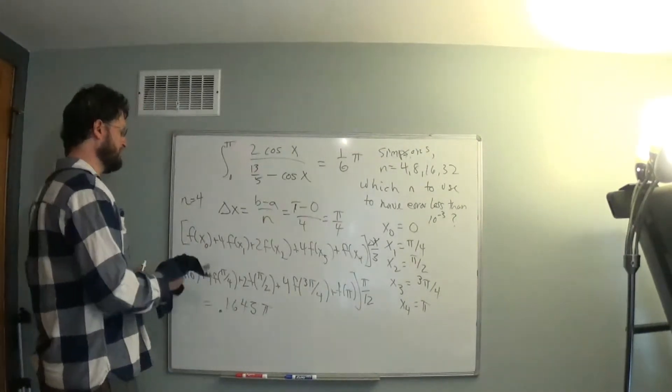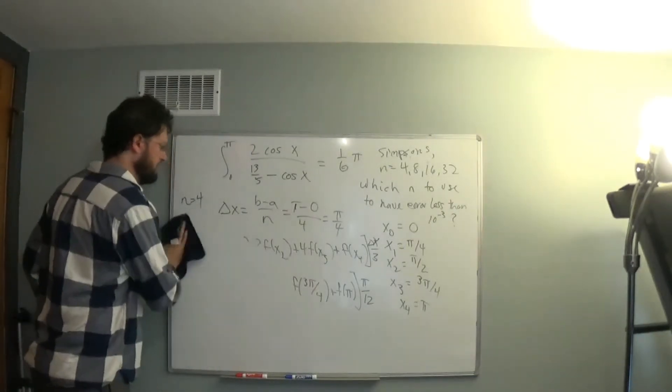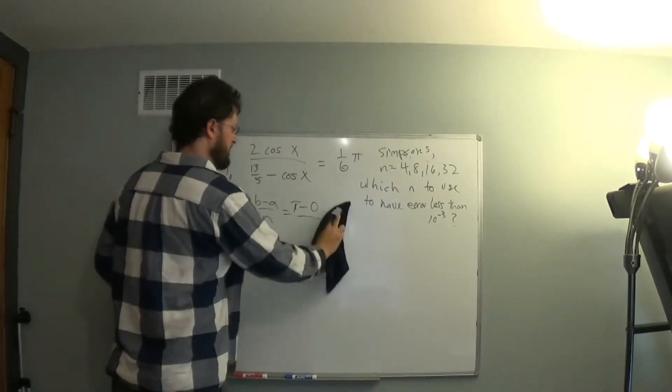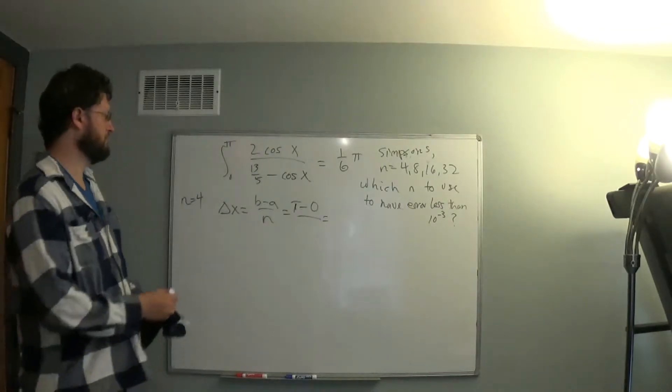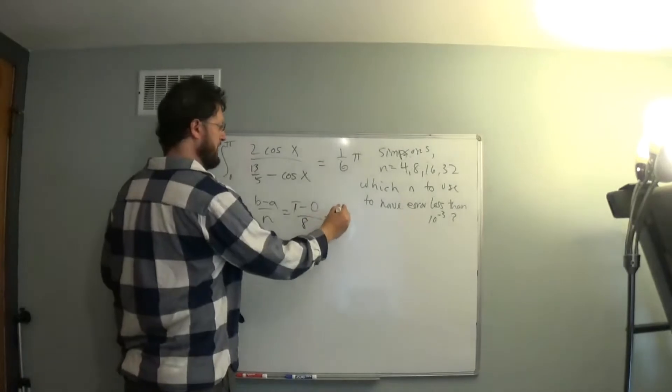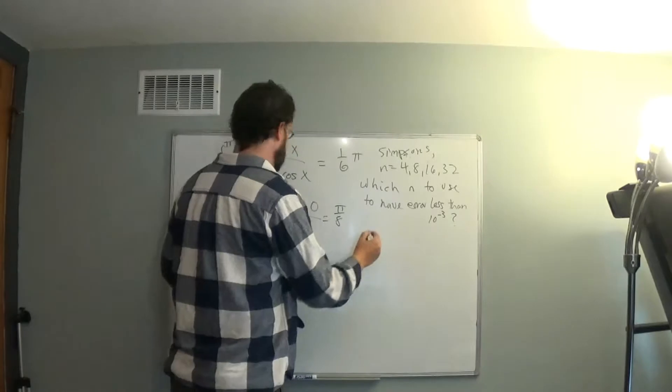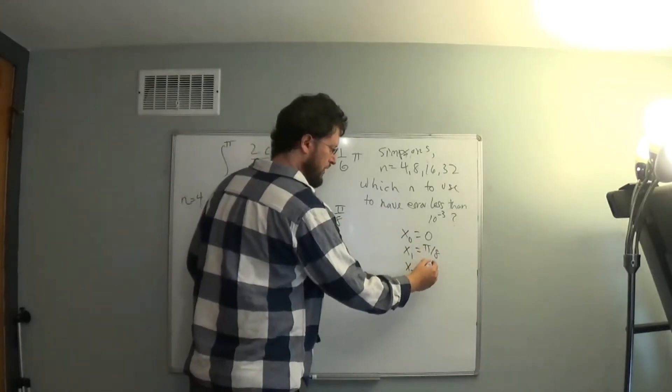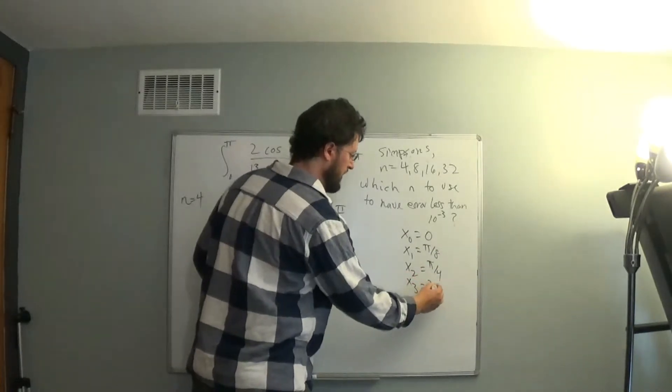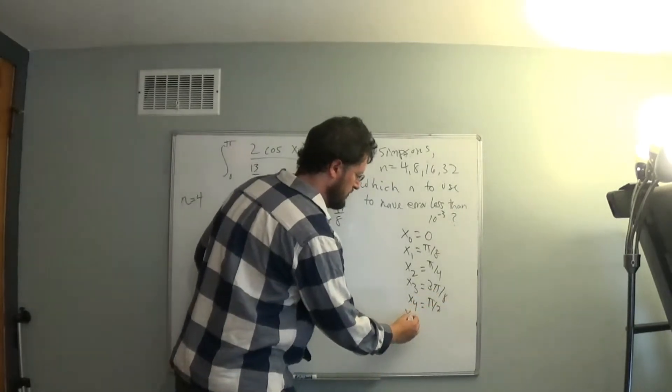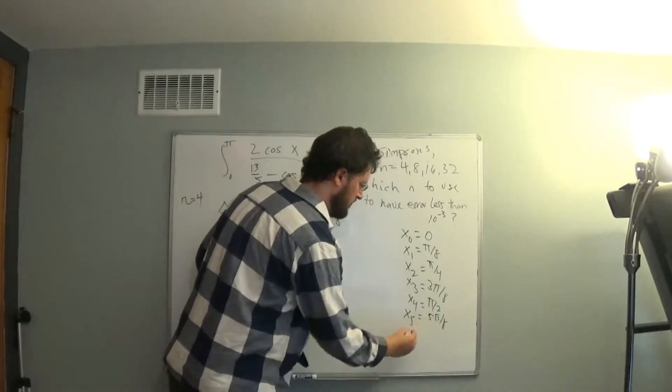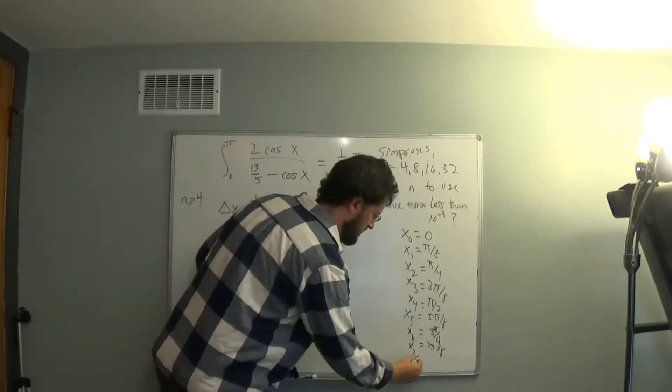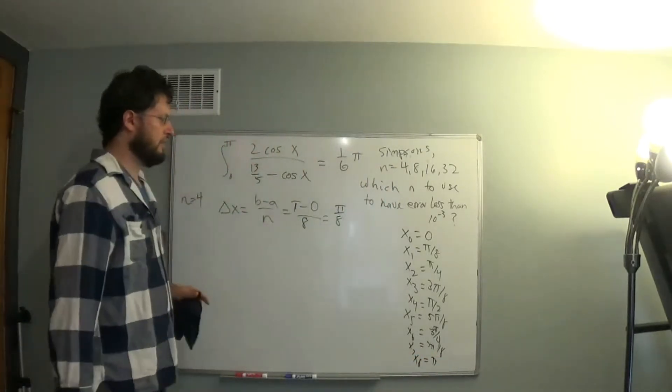So let's try n equal 8. If we try n equal 8, b minus a over n is pi minus 0 over 8 is pi over 8. And we work through our x values. x0 will be 0, x1 is pi over 8, we add delta x each time. x2 is 2 pi over 8, which is pi over 4. x3 is 3 pi over 8. x4 is 4 pi over 8, which is pi over 2. x5 is 5 pi over 8, x6 is 6 pi over 8, x7 is 7 pi over 8, and finally 8 pi over 8 is pi. So these are our x values.